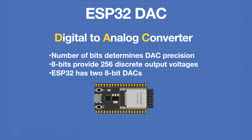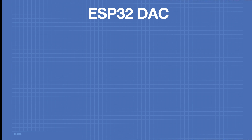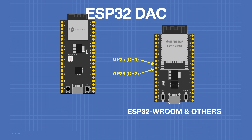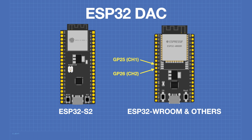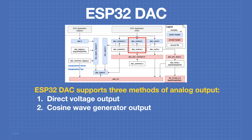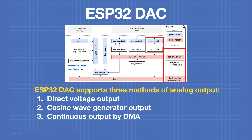The ESP32 has two 8-bit DACs. For the majority of ESP32 boards, the two DACs are located on GPIO pin 25 and GPIO pin 26. However, if you have an ESP32-S2, channel 1 of the DAC is on GPIO pin 17 and channel 2 is on GPIO pin 18. The ESP32 DAC supports three different methods of analog output: direct voltage output, the cosine wave generator output, and continuous output by DMA.